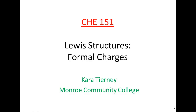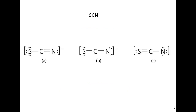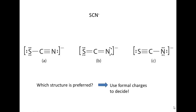Hi, this is Kara Tierney from Monroe Community College. In this video we're going to build on our knowledge of Lewis structures by adding the concept of formal charges. Formal charges help us sort through possible Lewis structures. In a previous video, we looked at the polyatomic ion SCN⁻ and came up with three valid structures for it. In order to determine which structure is preferred, or which structure will contribute the most to our overall resonance structure, we're going to use formal charges to decide.